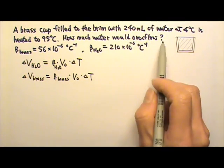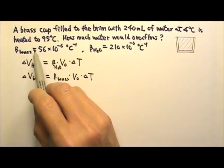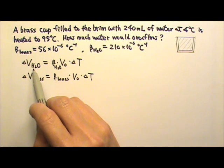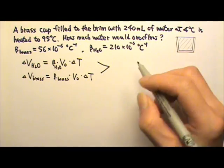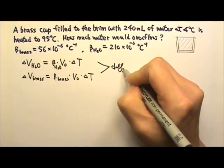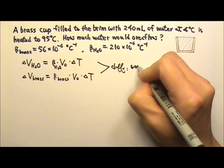The reason why water would overflow is because the water has a larger beta than the brass cup. So water is going to expand more than the cup. Therefore water would overflow. And the amount that's going to overflow is the difference between the two delta Vs, and that's the overflow amount.